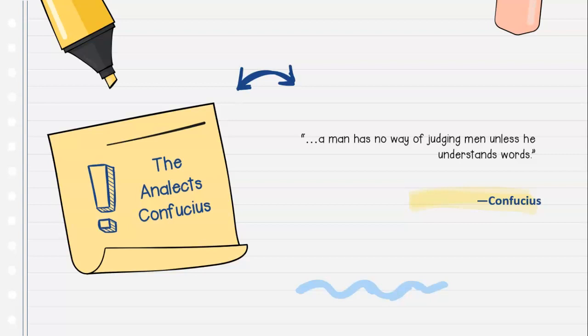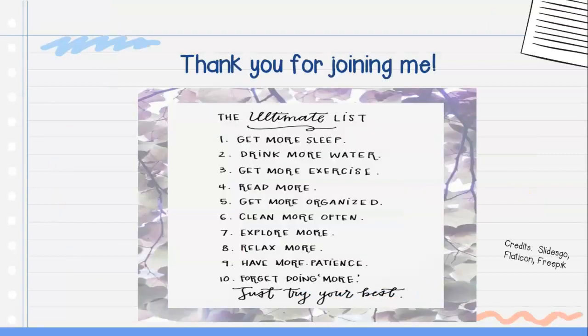Here we come to our quote section: 'A man has no way of judging men unless he understands words.' That is said by Confucius.